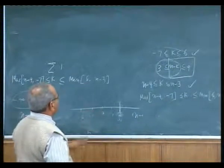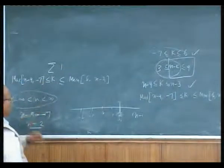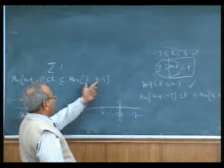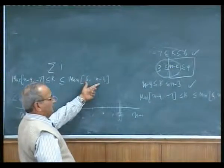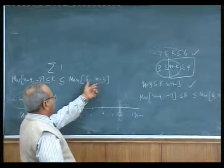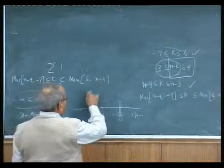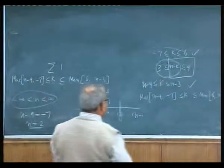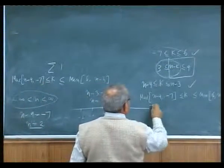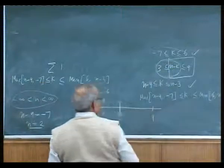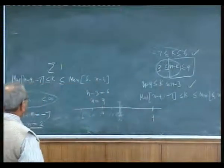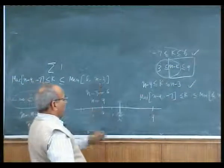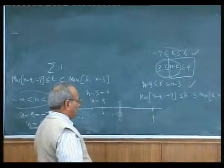Similarly for the minimum: as n varies, n minus 3 also varies, and both 6 and n minus 3 become equal when n minus 3 equals 6, that is when n equals 9. So we find two boundaries: n equals 2 and n equals 9. We need to find for what value of n these two pairs of elements are equal, giving us two boundary values.